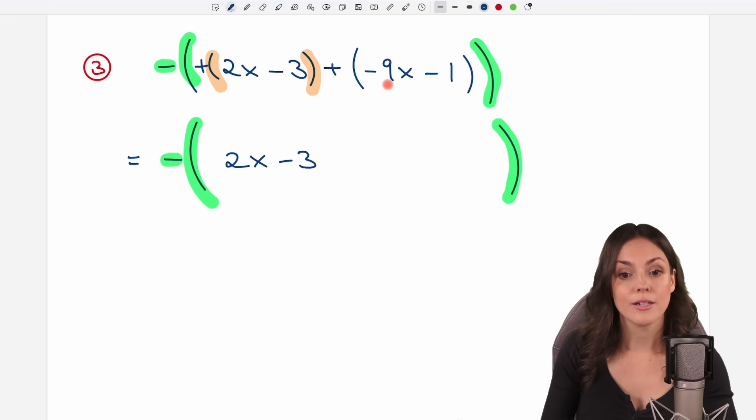Same thing here with our second parentheses. We have a plus in front of them, nothing else, so we can just leave them out. It's also important that there is nothing behind the parentheses. So if you have a times 3 here, maybe, then you have to take care of that as well. But like this, if you just have a plus in front of them, there is nothing behind them, you can just leave them out and write everything down as it is without changing anything.